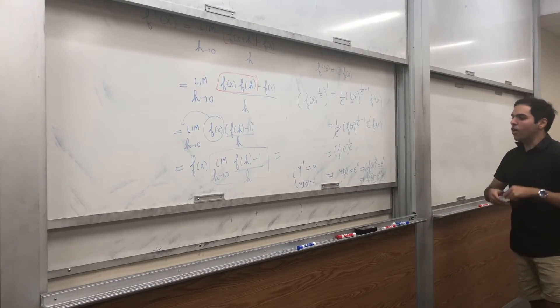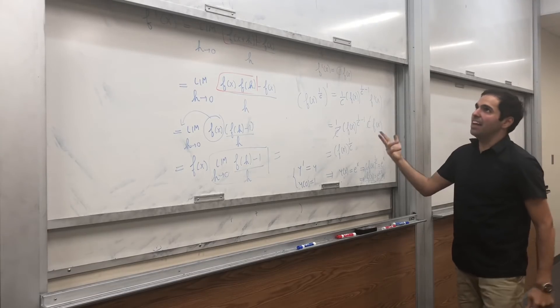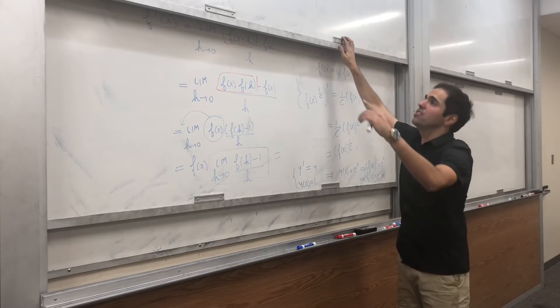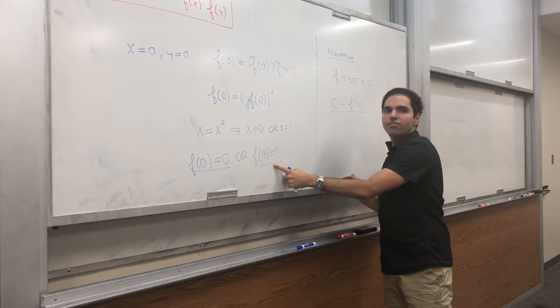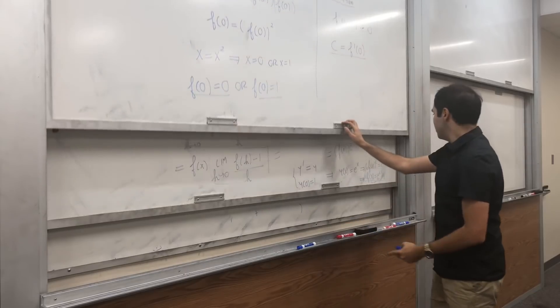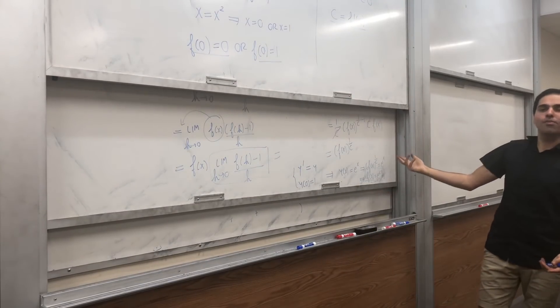In other words, the only functions that satisfy f of x plus y equals to f of x times f of y with f of 0 equals to 1, it's just e to the something x.